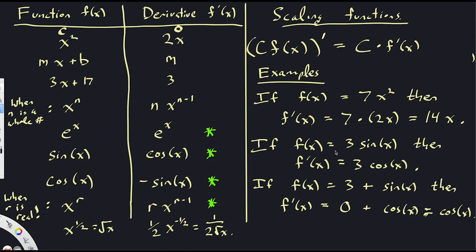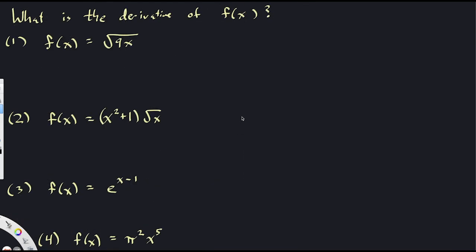Next, I want to do some examples that are a little tricky, close to what you'll see on the homework. We're going to find the derivative of four functions: √(9x), (x²+1)·√x, e^(x-1), and π²x⁵. Pretty soon you're going to want to use the chain rule or product rule on these, but we actually have everything we need already — if we take the time to use some algebra first to re-express them.